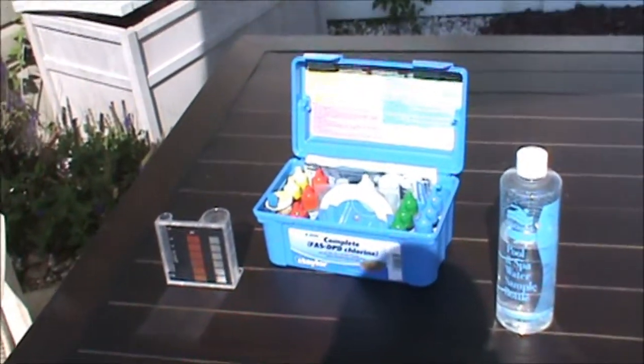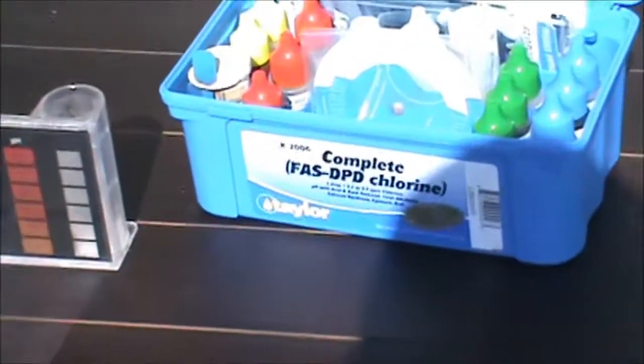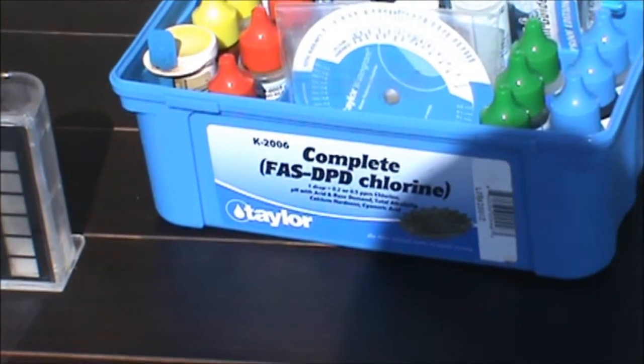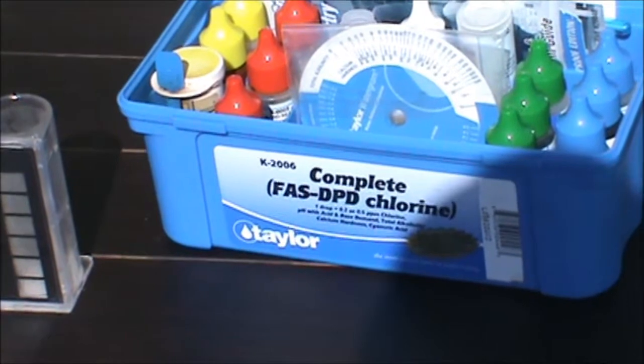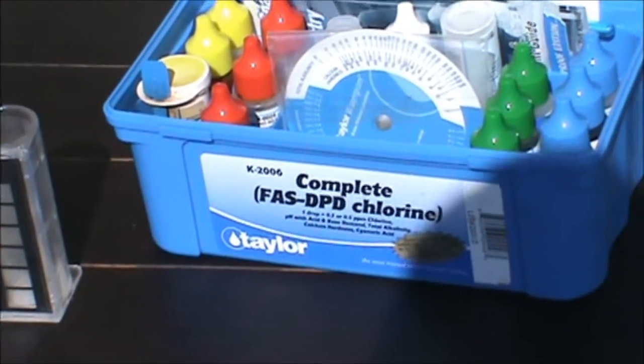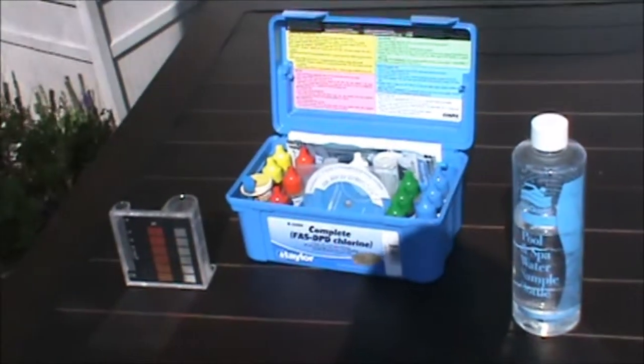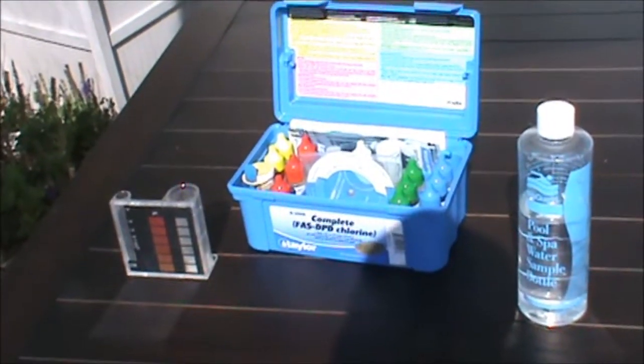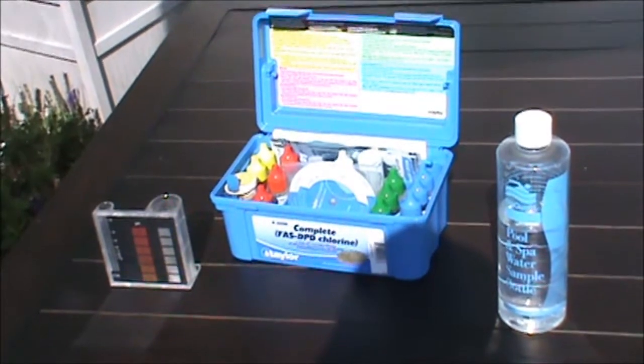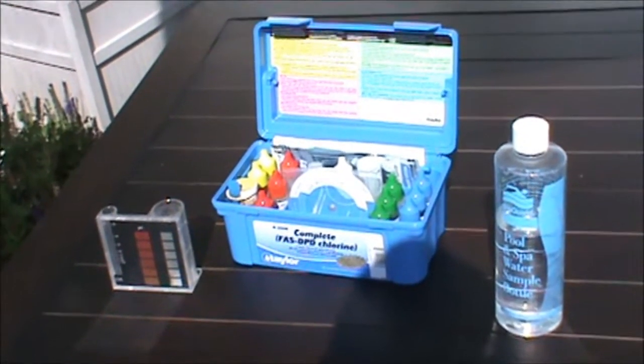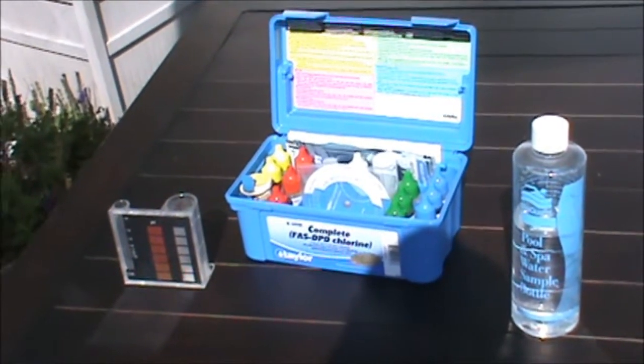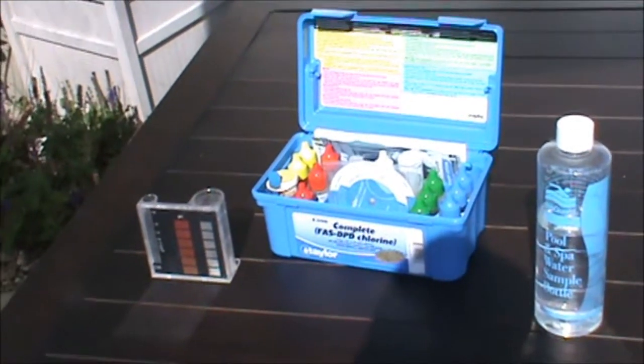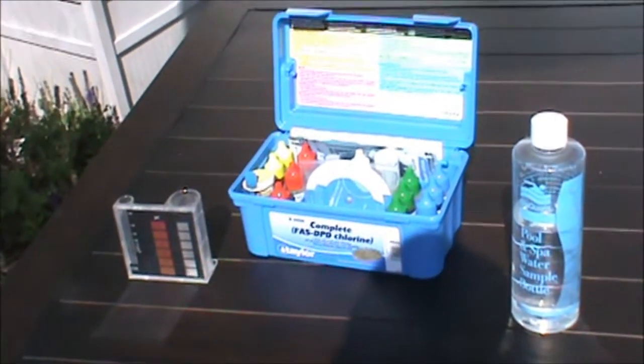The first thing that you're going to need is a good test kit. This one here is a Taylor K-2006 complete FAS-DPD chlorine test kit. This kit probably costs about 60 bucks. It'll last you at least a season and even more depending on how much you use it. You can always buy the new reactants, you don't have to buy a whole kit, so if you run out of one reactant you can get it by mail.